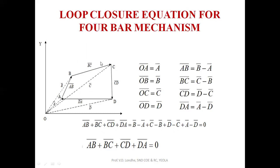For a spatial mechanism, it is represented in space having six degrees of freedom. This planar mechanism has three degrees of freedom — two translatory and one rotary. Here, the AD link is fixed, AB is the crank, BC is the coupler, and CD is the rocker.